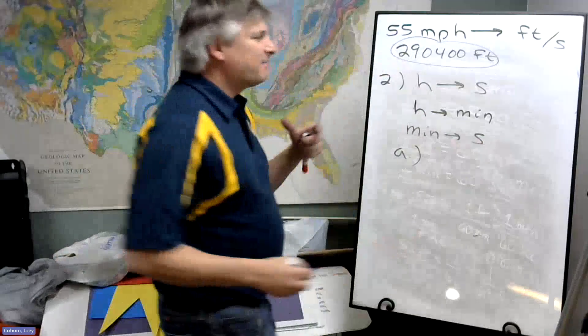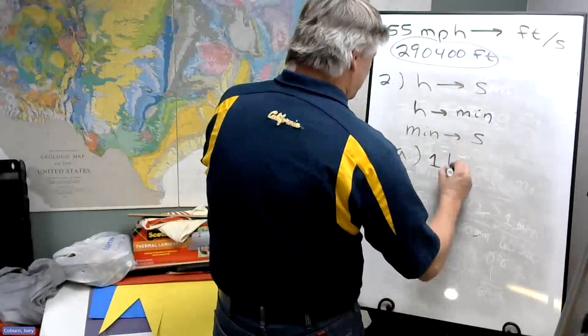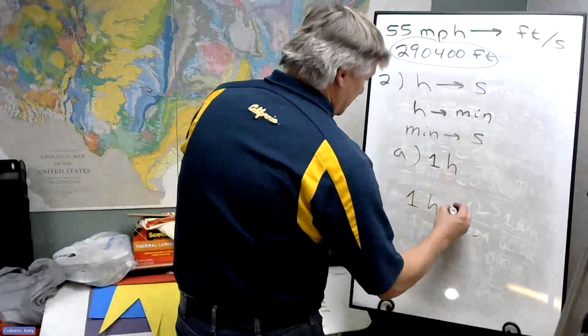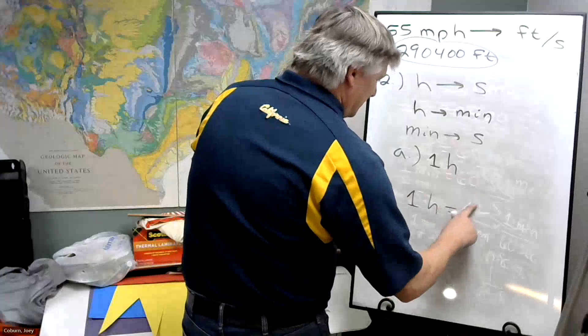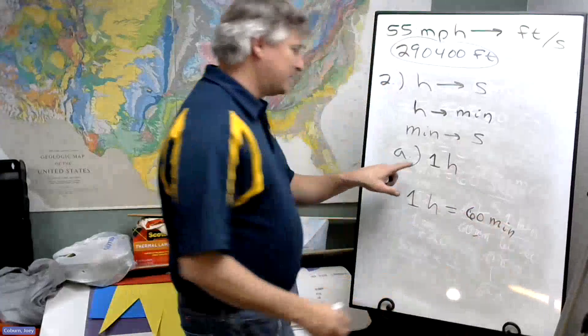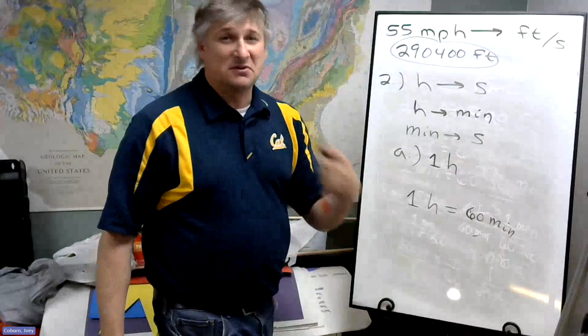So 55 miles per one hour. We want to convert one hour to seconds, and we're going to use the relationship that, well, to minutes first, that one hour is 60 minutes. Part A is we convert the hour to minutes. Part B is we turn the minutes to seconds.